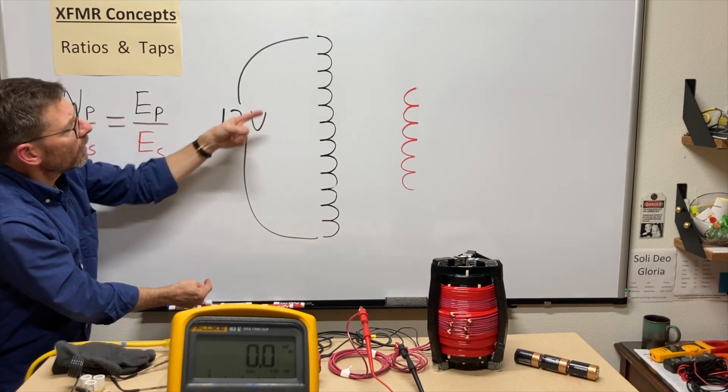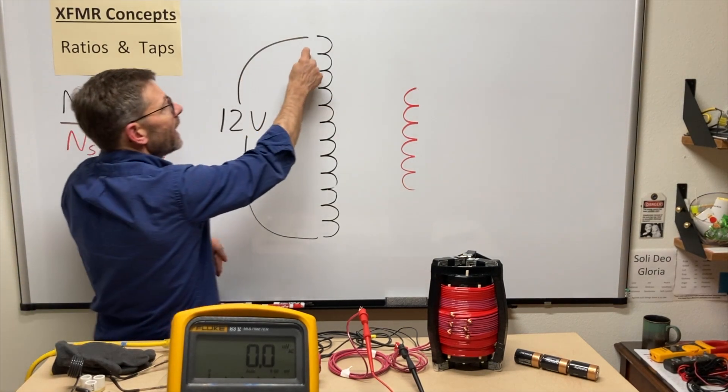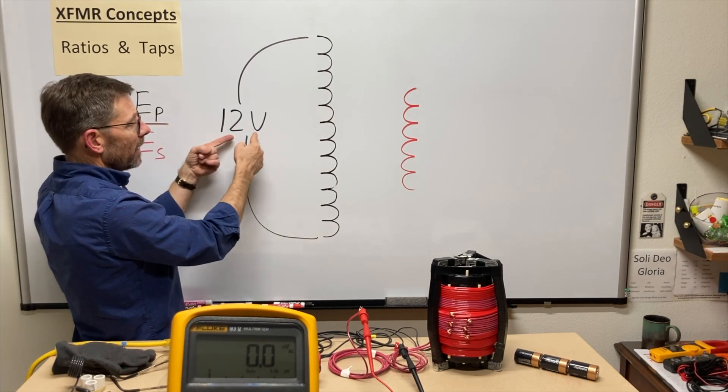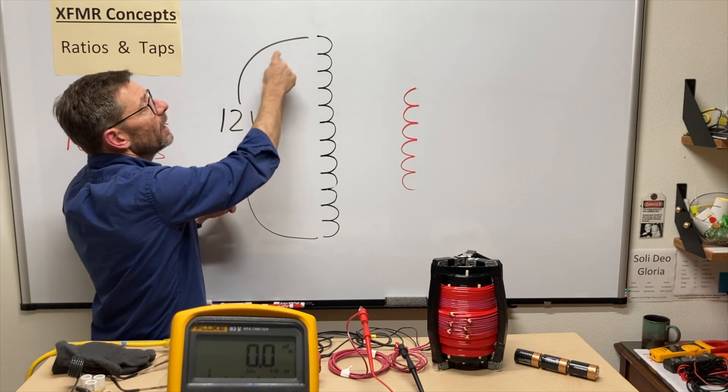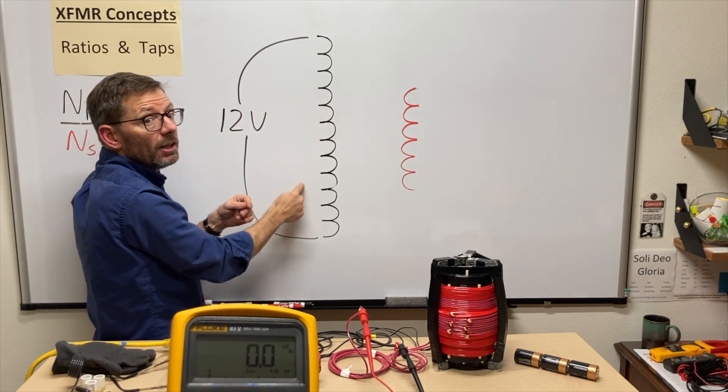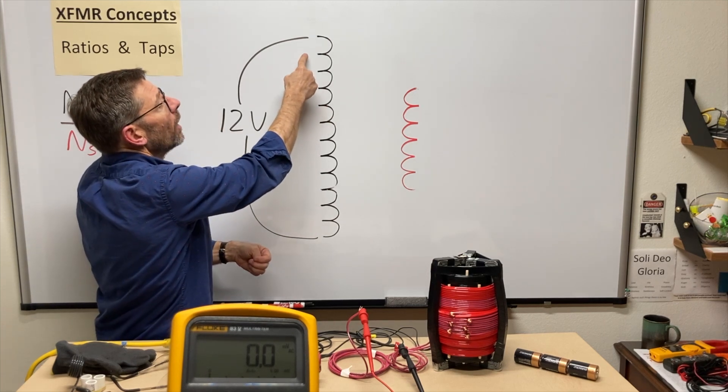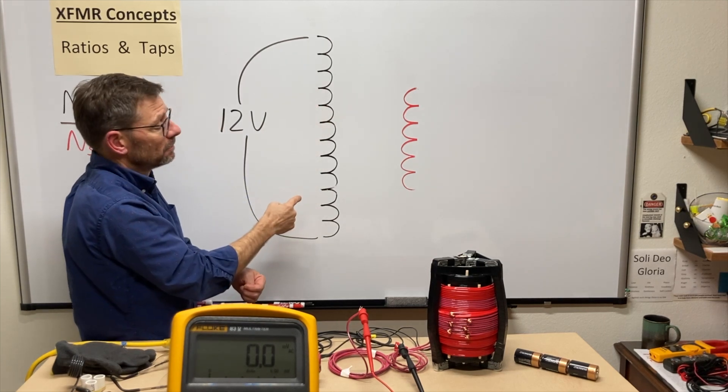So here, think of 12 volts hitting some other load. If I had 12 light bulbs in series, apply 12 volts, I would expect an equal voltage drop on each light bulb if they're the same wattage, same spec. And that would be one volt per light bulb.